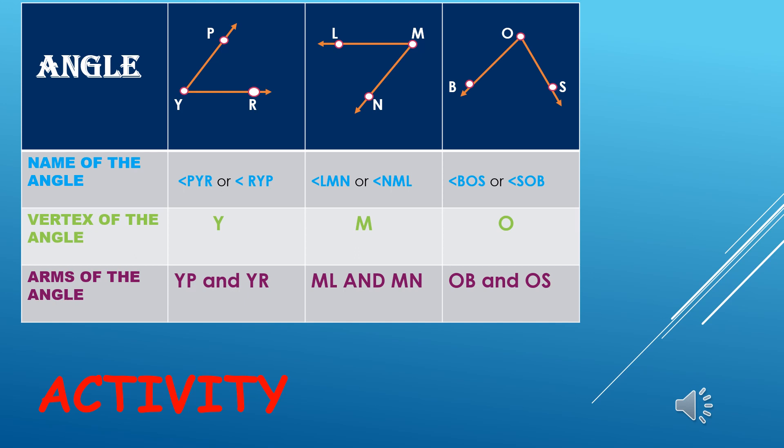Similarly, I have another angle: angle LMN, or I can read it as angle NML. So we have to make sure that the vertex has to be in the middle.